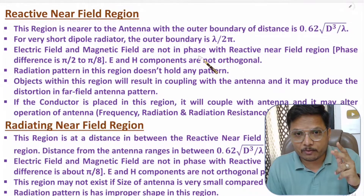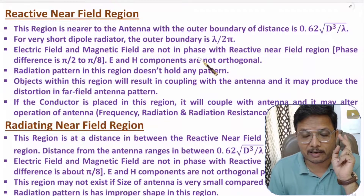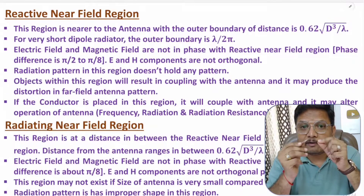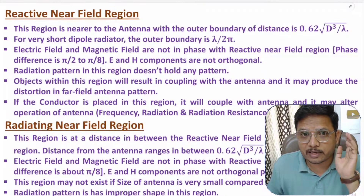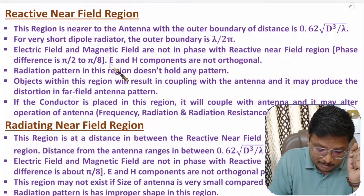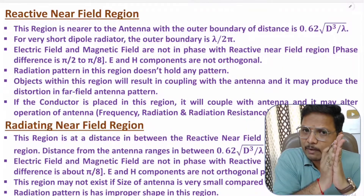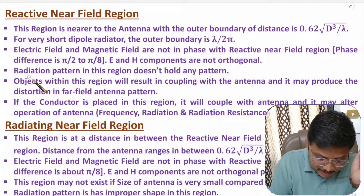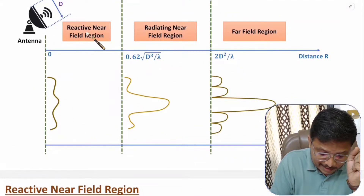In EM waves, E field and H field are in phase and orthogonal to each other. If electric field is varying vertically and propagating in one direction, then magnetic field will be varying horizontally and propagating in that direction — orthogonal and in phase in far field. But in the reactive near field region there will be a phase difference of π/2 to π/8: at the antenna it is π/2 and as you move far it decreases gradually. In this region, the radiation pattern holds no discernible pattern.